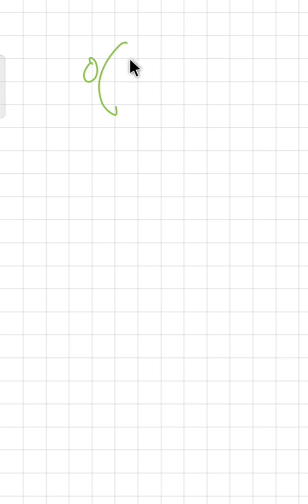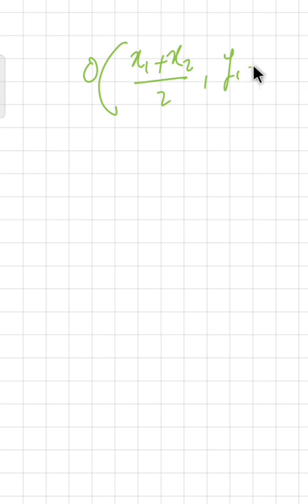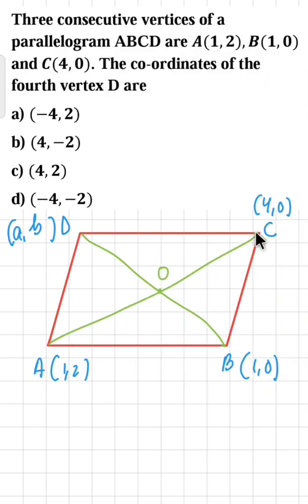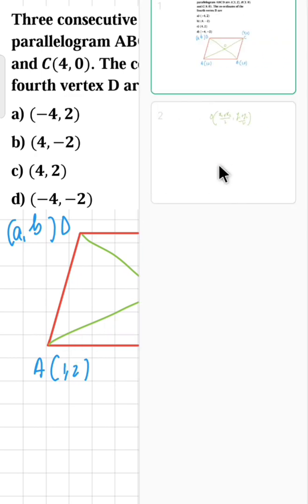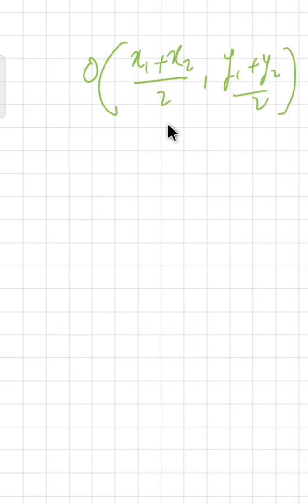The midpoint formula is: if O is the midpoint of two points, then its coordinates are (x1 + x2)/2 and (y1 + y2)/2. Since O is the midpoint of A and C, we will use this formula: x1 + x2 upon 2, comma y1 + y2 upon 2.